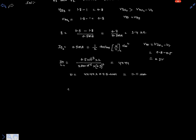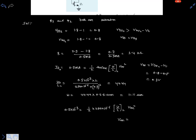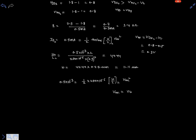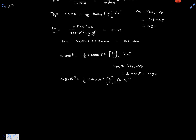Similarly, for transistor Q1, the drain current is also 0.5 milliamperes. Using the same saturation equation with μ₀Cox = 250×10⁻⁶ and W/L1, the overdrive voltage Vov1 equals VGS1 minus VT. VGS1 is 1 volt and VT is 0.5 volts, so Vov1 equals 0.5 volts. Substituting: 0.5×10⁻³ = (1/2) × 250×10⁻⁶ × (W/L1) × (0.5)².